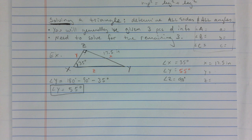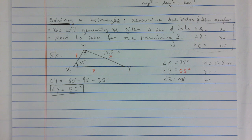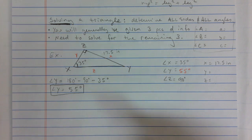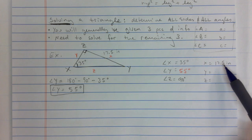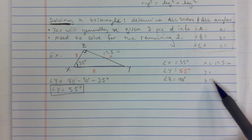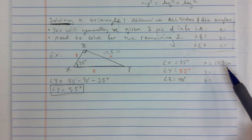So we figured out angle Y is 55 degrees and we can label that on the diagram. Now I have all my angles. I'm going to have to use SOHCAHTOA to get one more side. Note that you cannot use the Pythagorean theorem yet because you need at least two sides.